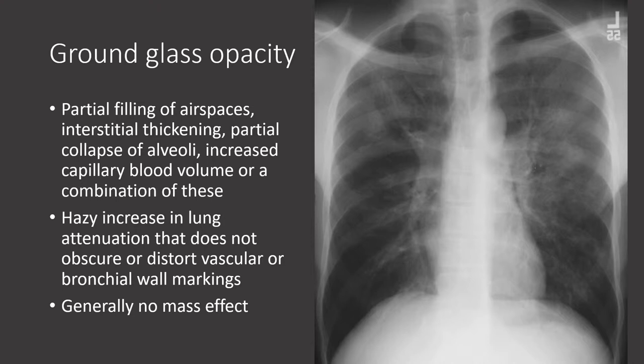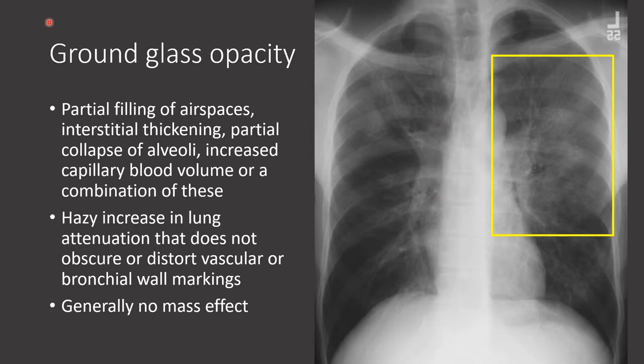Ground glass opacity is typically a term reserved for CT imaging. However, when ground glass opacity is present on CT, we can sometimes see it on chest radiograph as well. This is an example of a patient with diffuse ground glass opacities on CT. On chest x-ray, there are vague areas of increased lung density seen bilaterally in a perihilar distribution. This patient had HIV and was diagnosed with PCP pneumonia.